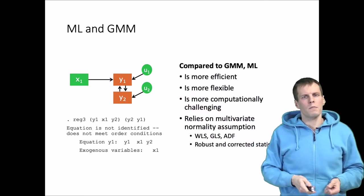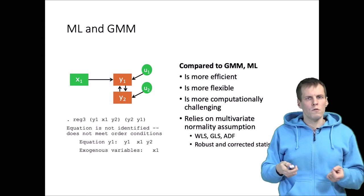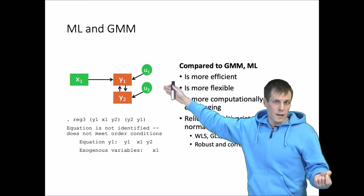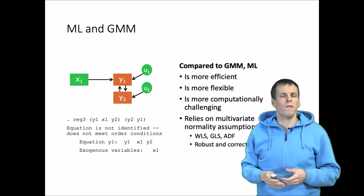With maximum likelihood estimation, if we have a good reason to do so, we can constrain these two error terms to be uncorrelated, which identifies the model and allows us more flexibility.